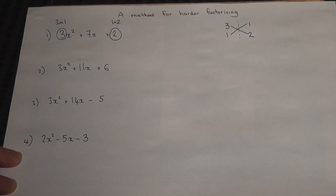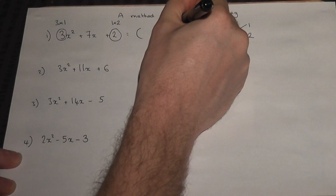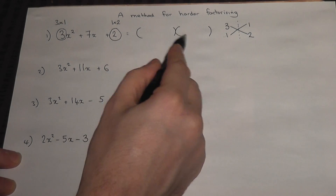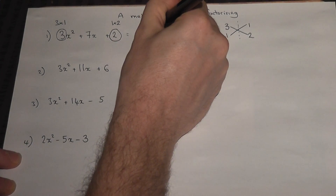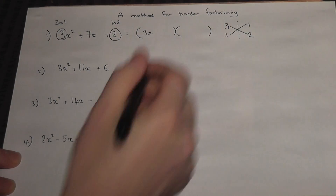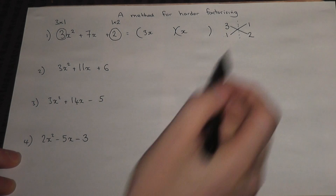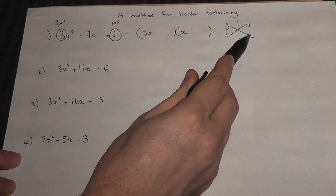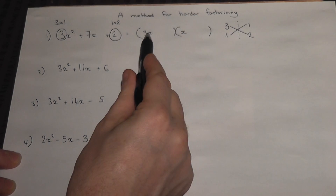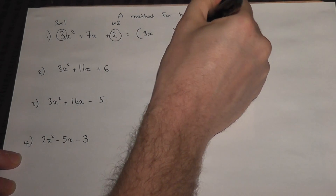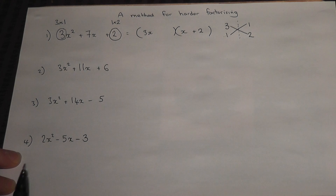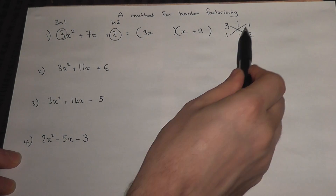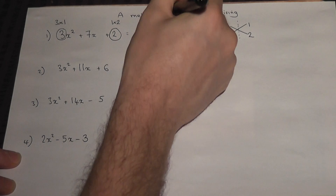To make the brackets and actually factorise it, we put our two brackets down. The first column tells us the x terms: 3x for the first bracket and 1x for the second bracket. This tells us that the 3 gets times by a 2, so the 3x gets times by a 2, and I must put the 2 in the other bracket. Because when you times brackets, you do 3x times by 2. And the 1x gets times by a 1, so I must put the 1 also in the other bracket.